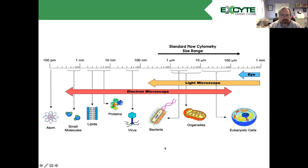Bacteria pose an interesting challenge in flow cytometry as they're at the lower limits of our resolution. So it's very useful to have fluorescent tags to be able to identify these. One of the common assays for bacterial flow is viability.